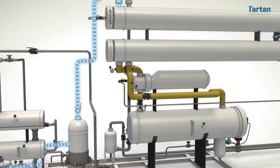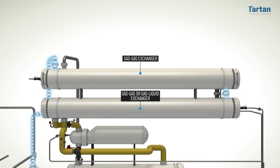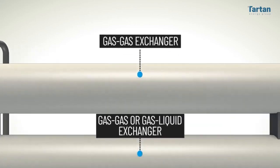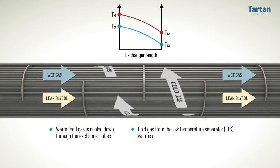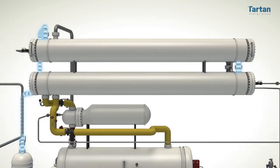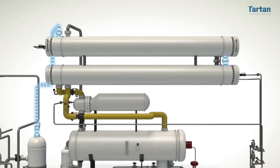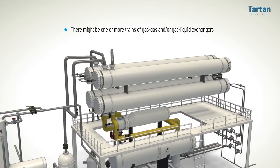From there, the gas is chilled through a series of gas-gas exchangers. In the gas-gas exchanger, warm feed gas is cooled down through the exchanger tubes while cold gas from the low temperature separator, or LTS, warms up in the shell side to meet sales gas specification. Depending on the size of the plant and the amount of gas being processed, there might be one or more trains of gas-gas and/or gas-liquid exchangers.